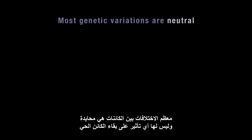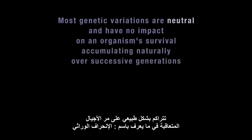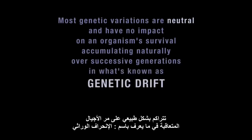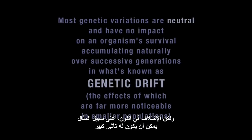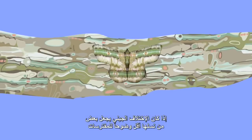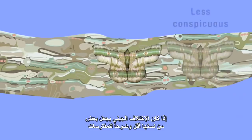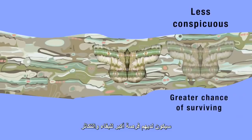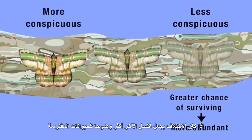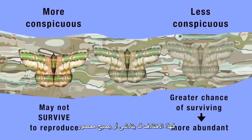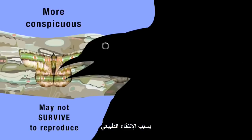Most variations are neutral and have no impact on an organism's survival, accumulating naturally over successive generations in what's known as genetic drift, the effects of which are far more noticeable in smaller populations. But a variation in colour, for example, could have a major impact. If genetic variation makes some of an insect's offspring less conspicuous to predators, they'll have a greater chance of surviving and reproducing, and over time the insects with this variation may become more abundant. If the variation makes other offspring more conspicuous to predators, they may not survive to reproduce, and the variation may vanish or become suppressed because of natural selection.